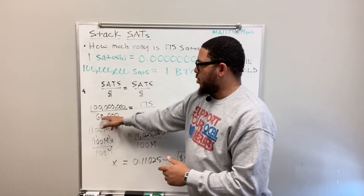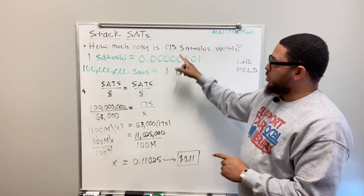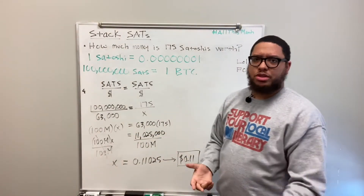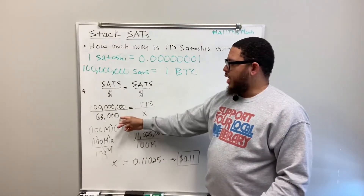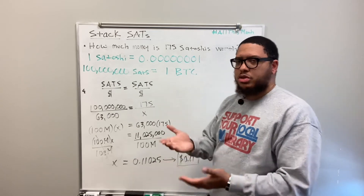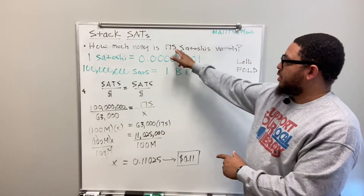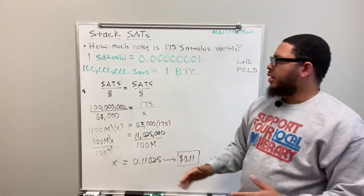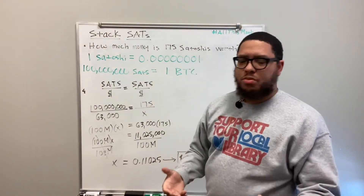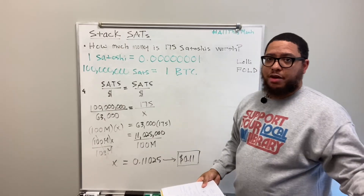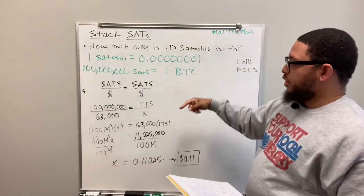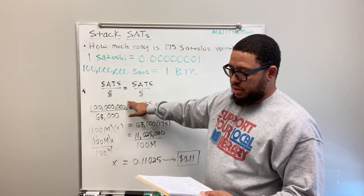There's also the time value of money — this is an investment. As the price of Bitcoin increases, the value of satoshis increases too. Just in December 2020, Bitcoin was around $20,000. By April here, it's $63,000 for one Bitcoin. There's also an alternative method: take the number of satoshis and multiply by the value of one satoshi, which you get by dividing $63,000 by 100 million.